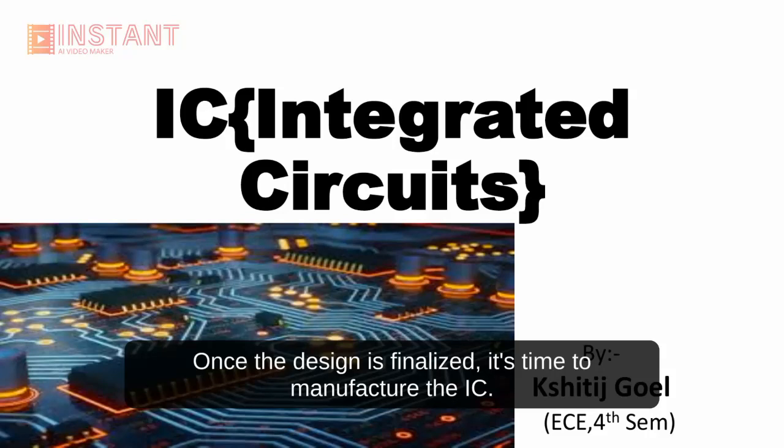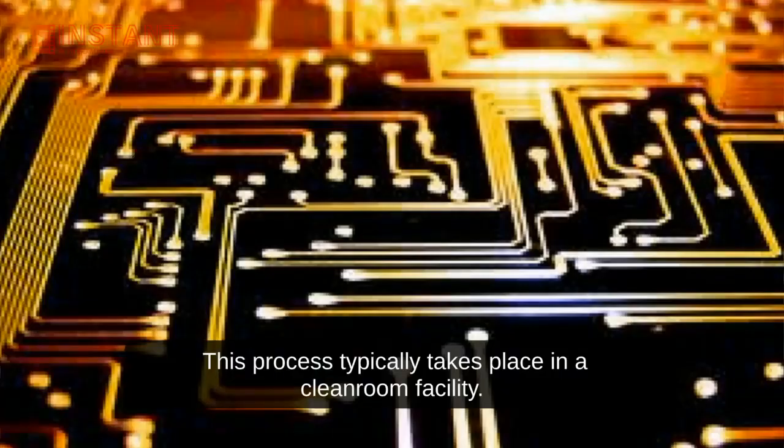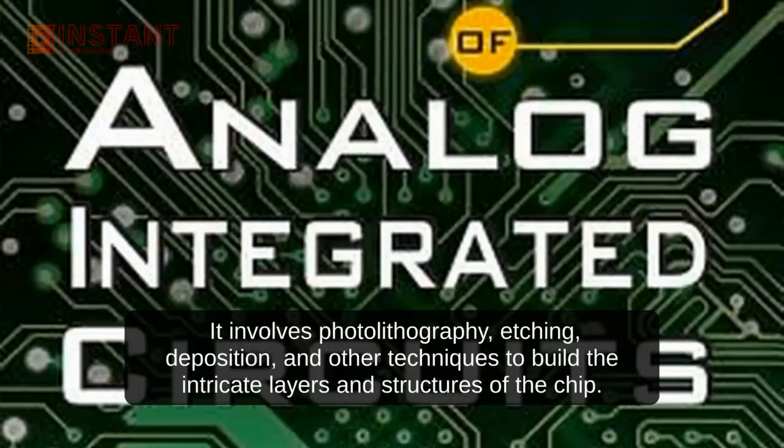Once the design is finalized, it's time to manufacture the IC. This process typically takes place in a cleanroom facility. It involves photolithography, etching, deposition, and other techniques to build the intricate layers and structures of the chip.